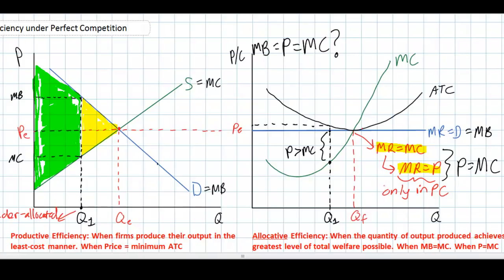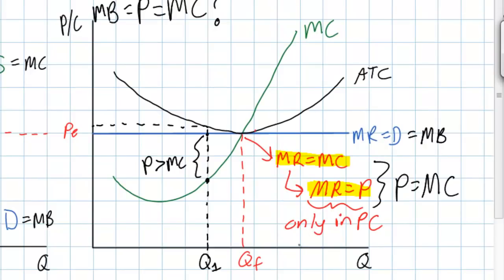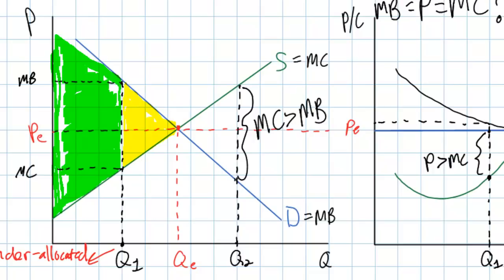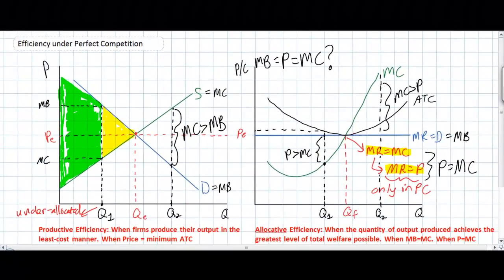If firms produced beyond the profit maximizing level at Q2, the marginal cost would be much greater than the price — resources would be over-allocated. In our market diagram, too much would be produced; the marginal cost to firms exceeds the marginal benefit enjoyed by consumers. Allocative efficiency requires that firms produce where price equals marginal cost. At any level greater or less than that, resources will be either over-allocated or under-allocated. Since firms aim to maximize profits, they will produce where marginal revenue equals marginal cost, which under perfect competition also means price equals marginal cost — achieving allocative efficiency.